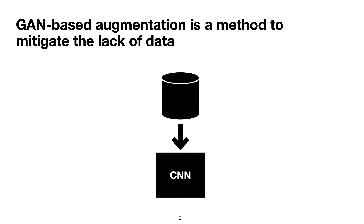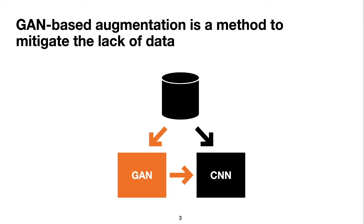I will start with an explanation of what is GAN-based data augmentation. It is a method to mitigate the lack of data. Usually the traditional pipeline is we feed a CNN, for example, with a dataset and it needs to learn predictive features to be able to predict the class of new samples. For GAN-based augmentation, the idea is that this dataset will also feed a GAN that is responsible to learn the data distribution and provide the CNN with other useful data points that will make it easier to learn good features.